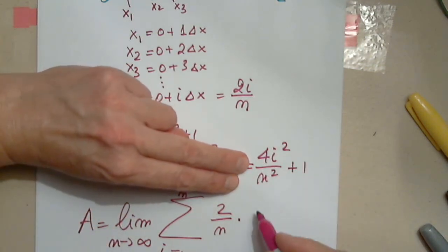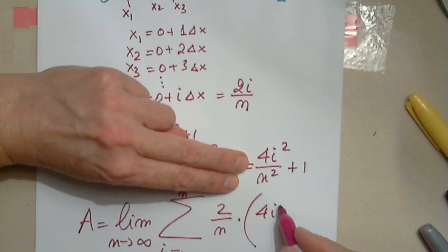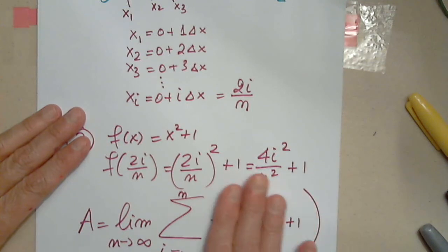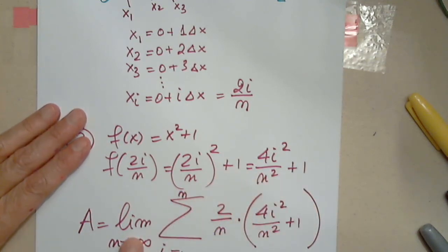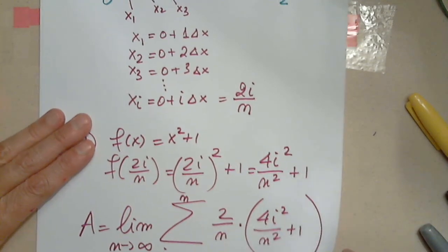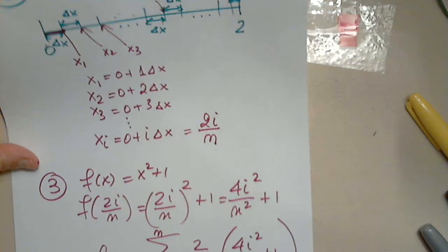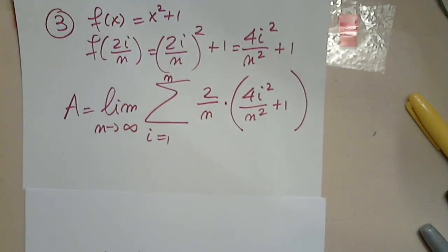This, in parentheses, 4i squared over n squared plus 1. Now the problem reduces to finding this limit, finding the sum, and then finding the limit applied to the sum. And then we will have the exact area with no approximations whatsoever.